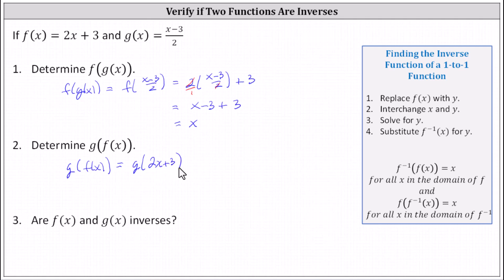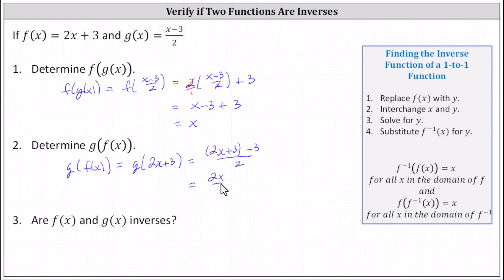2x plus 3 becomes the input for the function g of x. Substituting 2x plus 3 for x in g of x, we get the quantity 2x plus 3 minus 3, all divided by 2. Simplifying, 2x plus 3 minus 3 simplifies to 2x, giving us 2x divided by 2, which also equals x. Because both composite functions are equal to x, we know f of x and g of x are inverses of one another.